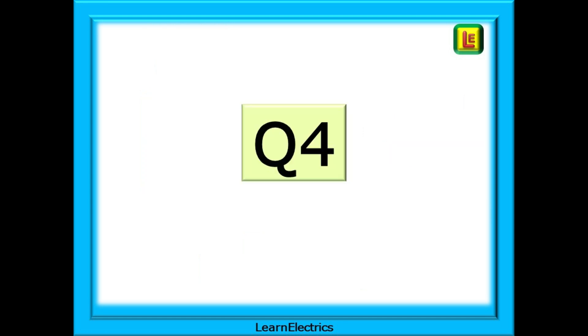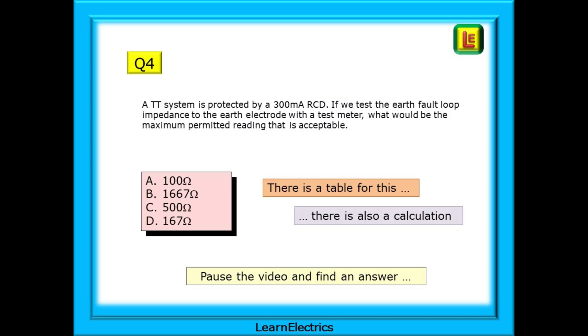And now to question number four about TT systems. A TT system is protected by a 300mA RCD. If we test the earth fault loop impedance to the earth electrode with a test meter, what would be the maximum permitted reading that is acceptable? There are four answer choices and by way of a little tip, the answer can be found in a table or by using a very quick and easy calculation.